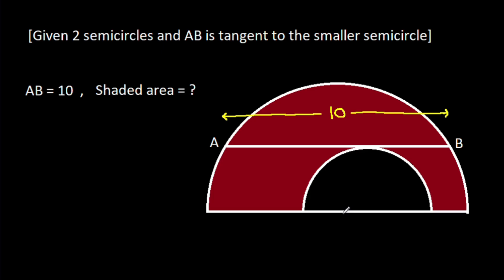Suppose the center of the bigger semicircle is O, and from point O if we make a perpendicular on AB, suppose this point is M. Then in any circle if AB is a chord and O is the center, and from point O if we make a perpendicular on AB, suppose this point is M.